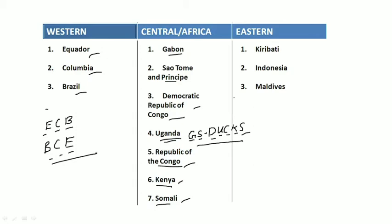Then move on to the eastern part — three countries: Kiribati, Indonesia, and Maldives. Remember them as K.I.M.: K for Kiribati, I for Indonesia, M for Maldives. So overall: first BCE, then GS Ducks, then KIM.